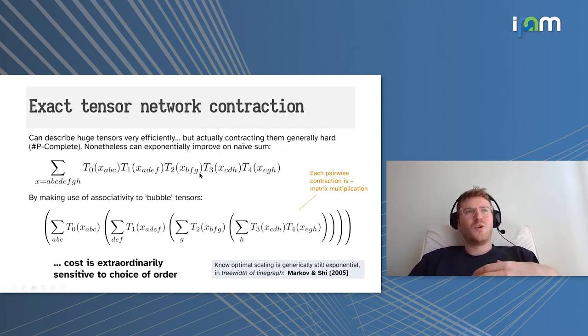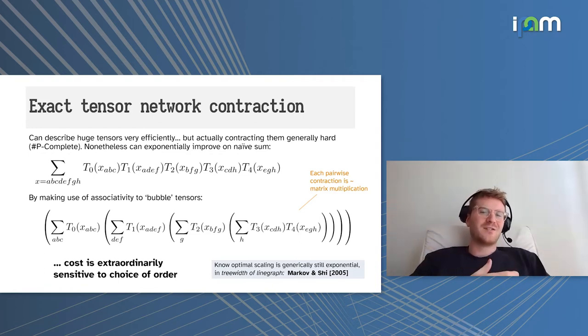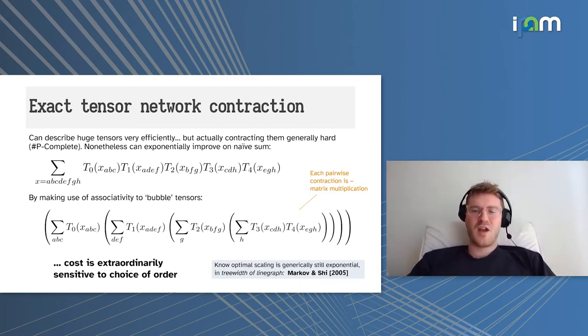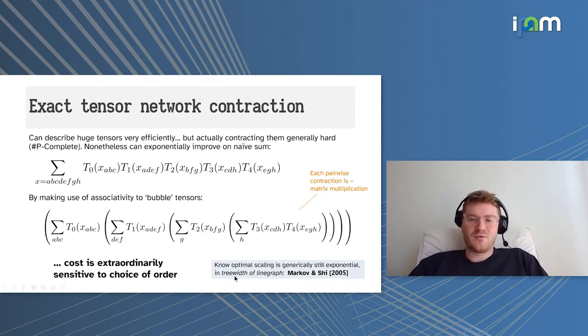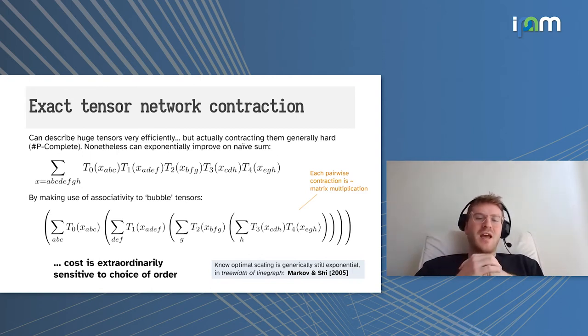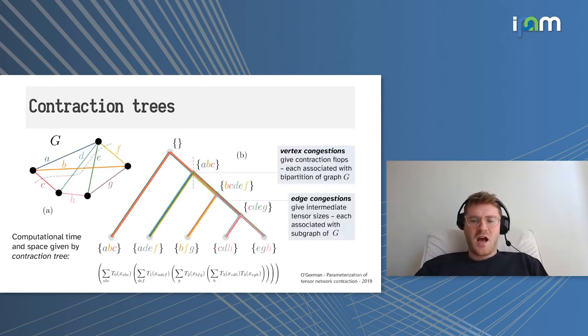There's two negative things to say. One, for a general tensor network, we know that in the worst case it will still be exponentially costly to contract. Also, finding the optimal path to find that best contraction path is going to be incredibly difficult. There's this result that the best contraction path is associated with the tree width of the line graph. But the upside is the cost is so extraordinarily sensitive to the choice of this order that by optimizing it a bit, you can get these huge exponential gains in real computational power that bring objects we thought might not be able to be contracted—you can actually contract them. Quantum circuits will be an example I give later.